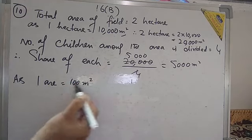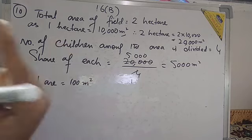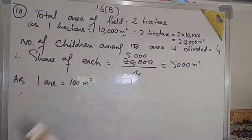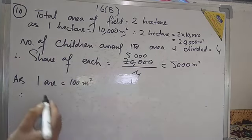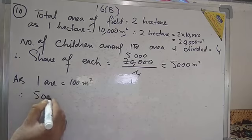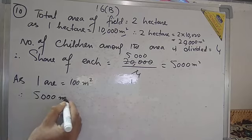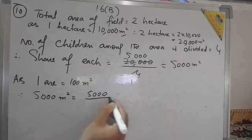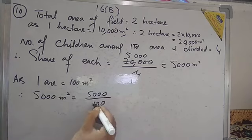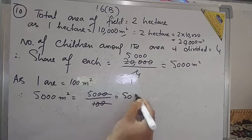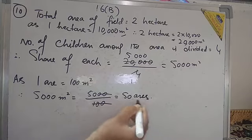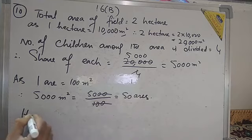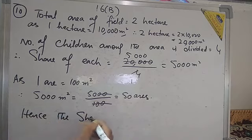Now, 1 are (unit of area) equals 100 square meters. Therefore, 5,000 square meters divided by 100 gives 50 ares. So, the share of each son is 50 ares.